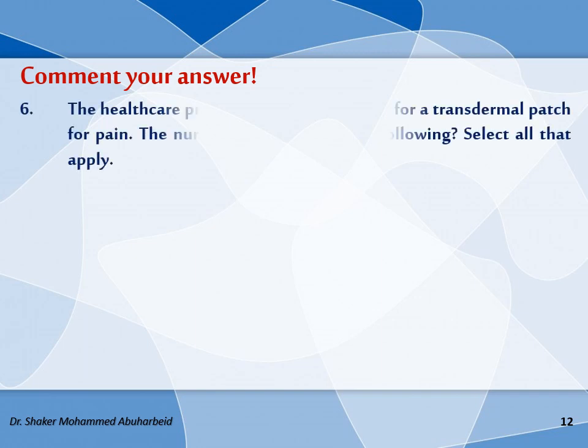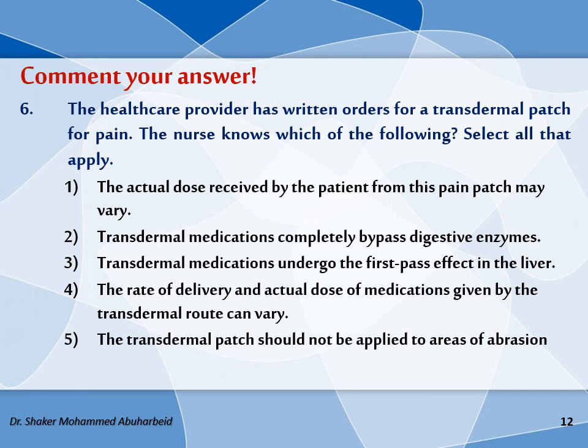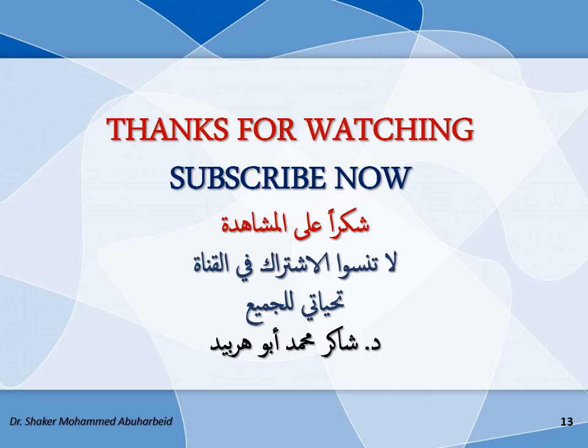Please comment your answer. The question is: the healthcare provider has written orders for a transdermal patch for pain. The nurse knows which of the following — select all that apply. The options include: the actual dose received by the patient from this pain patch may vary; transdermal medications completely bypass digestive enzymes; transdermal medications undergo the first-pass effect in the liver; the rate of delivery and actual dose of medications given by the transdermal route can vary; and the transdermal patch should not be applied to areas of abrasion. Please comment your answer for this video. Thank you for watching and your comments.